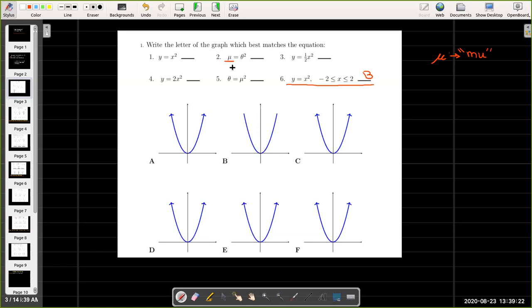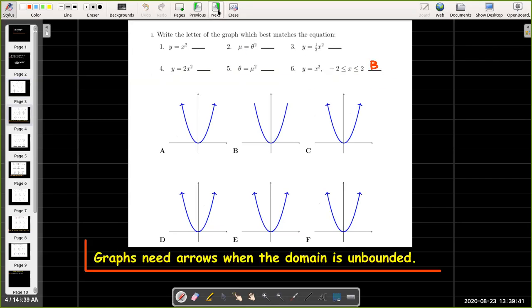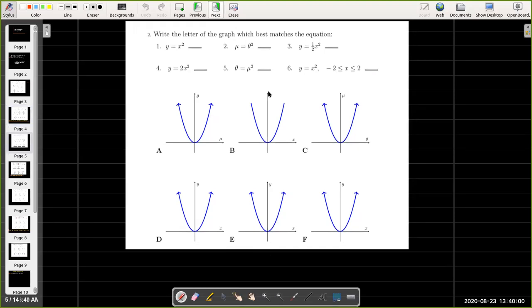Now by the way this letter over here is a Greek letter and we call it mu. I assume you've seen theta before somewhere probably in trigonometry. Well let's add some more information. Before we do that let's note that we need to have arrows if the graph continues without bound. And we can tell the difference between a graph like A and B.